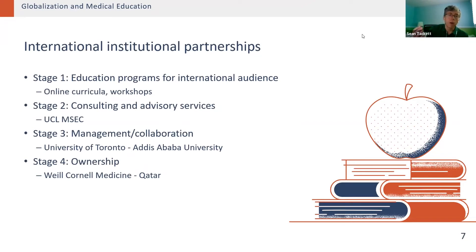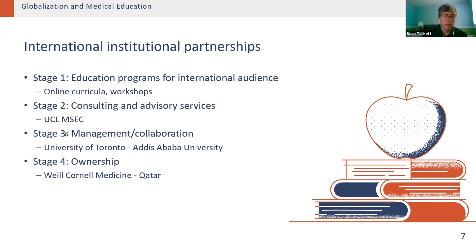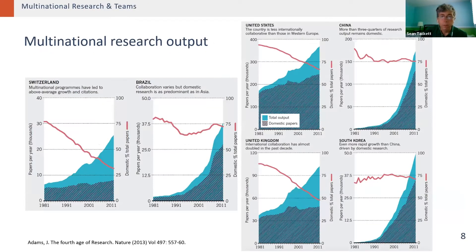To give a framework for thinking about how much of a partnership you might be part of: Stage one is just doing an educational program for an international audience. Stage two is more consulting and advisory, more longitudinal — for example, University College London has a consultancy that charges for its services. Stage three would be a formal partnership or collaboration, such as the University of Toronto's existing one with Addis Ababa in Ethiopia. And then there's a joint venture or ownership, like Weill Cornell Medicine in Qatar, where they run a campus.